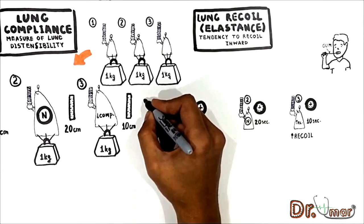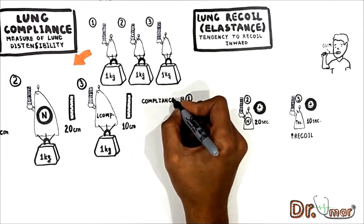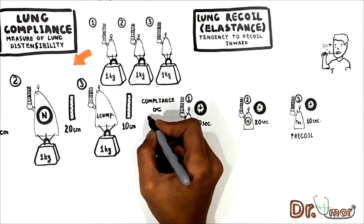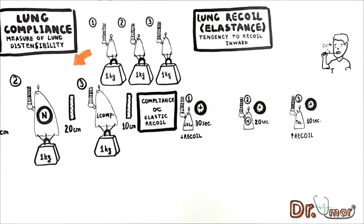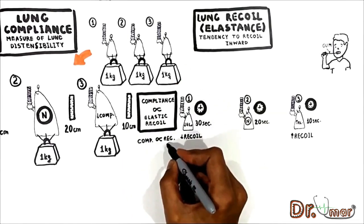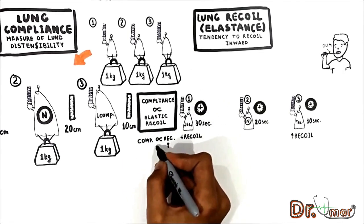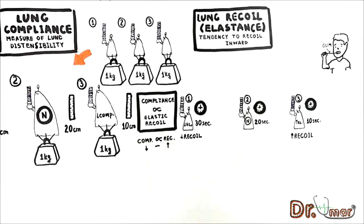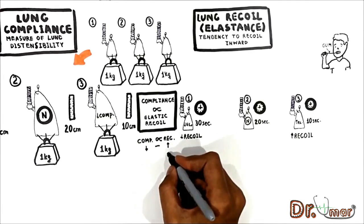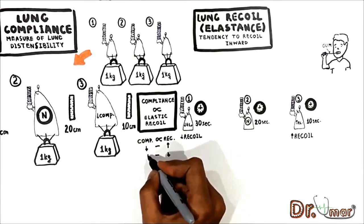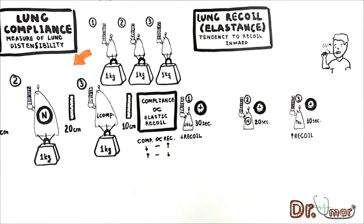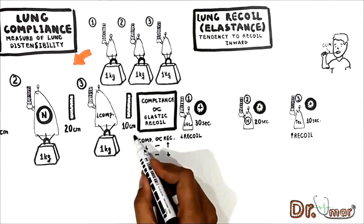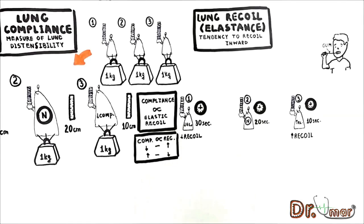To sum it up: compliance is inversely related to elastic recoil. Increased elastic recoil of the lung as a result of disease decreases lung compliance, whereas decreasing recoil increases compliance. Now let's talk about how we determine lung compliance in vivo.